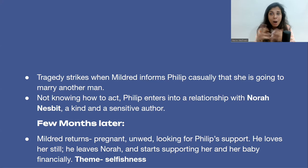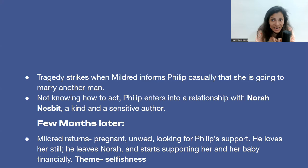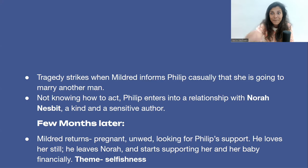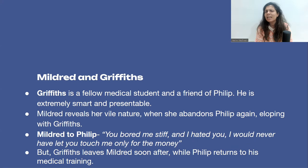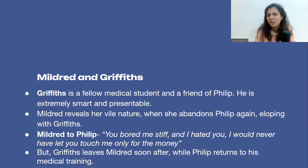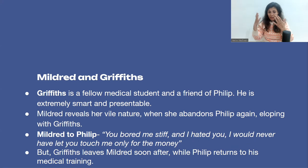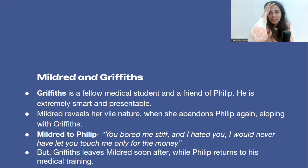Philip has no money and knows that when his uncle dies he will receive an inheritance. There is even a moment in the novel where he considers the idea of killing his uncle to get the inheritance. A new character named Griffiths enters — a fellow medical student and friend of Philip who is extremely smart and presentable. Philip is very jealous of Griffiths. Mildred reveals her wild, cunning nature once again: she abandons Philip and runs away with Griffiths. Griffiths is Philip's own friend, and Mildred was living on Philip's mercy — both these people cheat on Philip and run away. Philip is devastated yet again.